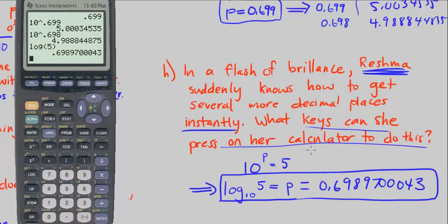So this ends our look at the meaning of decimal exponents — CPM Precalculus, Chapter 3, Number 9.